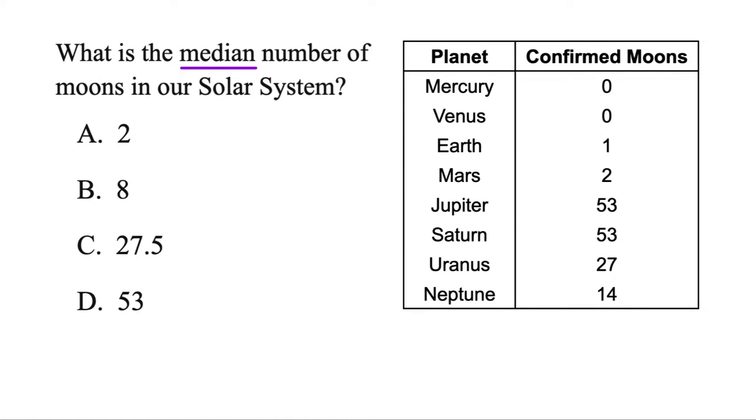The next one. What is the median number of moons in our solar system? To find the median, you'll always line them up from smallest up to the biggest. And then you want to find out which one's in the middle. So let's cross off the smallest, the biggest, the next smallest, next biggest. Keep going. But in this case, there's two numbers in the middle.